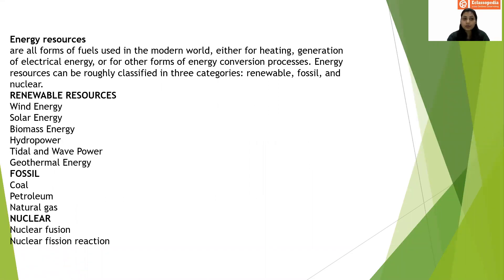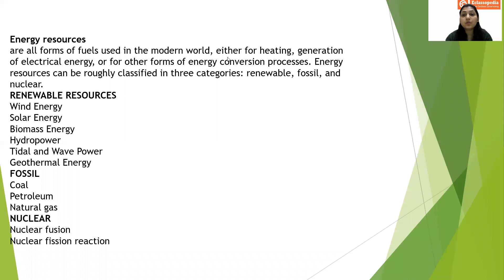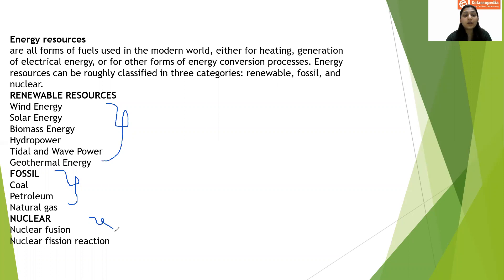Now let us check out energy resources. All forms of fuels in the modern world are used for heating, generation of electricity, or conversion processes. Energy resources can be categorized into three types: renewable resources, fossil fuels, and nuclear resources. Renewable resources include wind energy, solar energy, biomass energy, hydropower, tidal energy, wave power, and geothermal energy. Fossil fuels include coal, petroleum, and natural gas. For nuclear, examples include nuclear fusion and nuclear reactions.